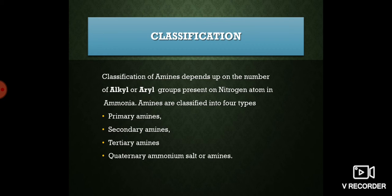Now we go for the classification of amines. It depends upon the number of alkyl or aryl groups present on the nitrogen atom. We can classify amines broadly into four types: primary amines, secondary amines, tertiary amines, and quaternary ammonium salts.